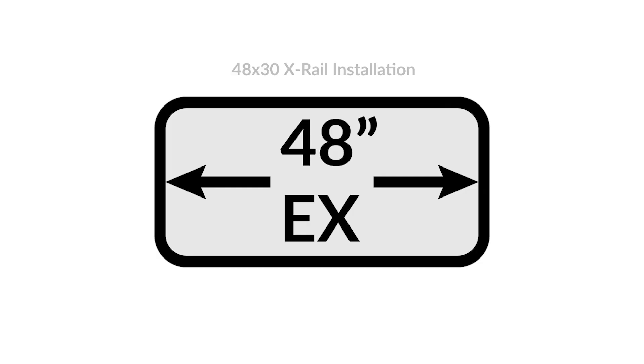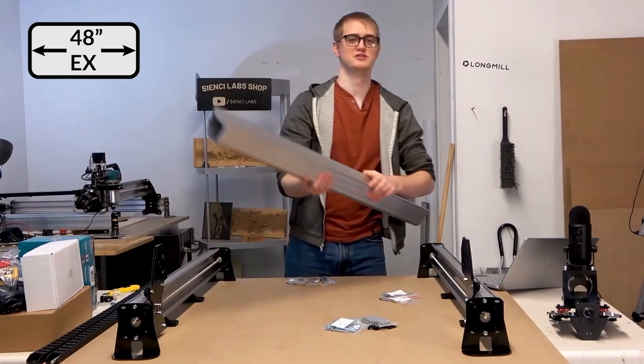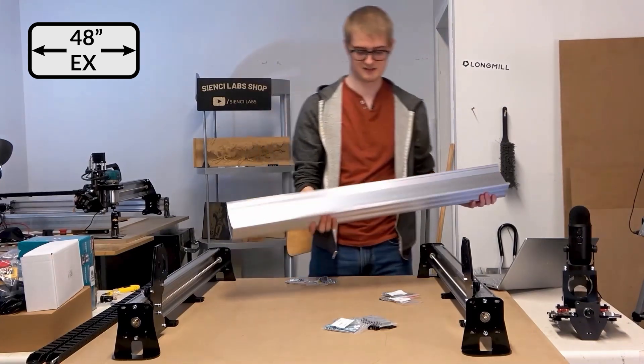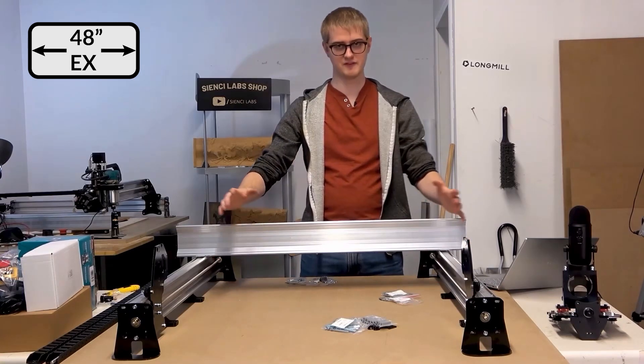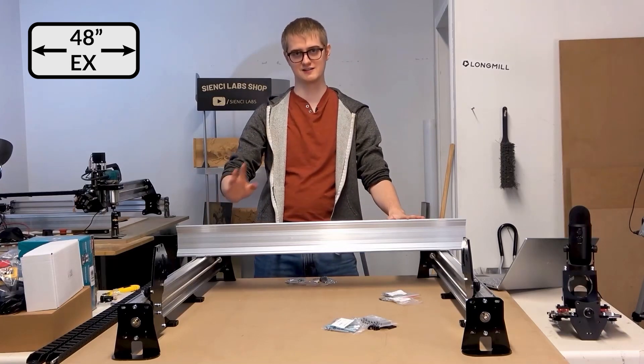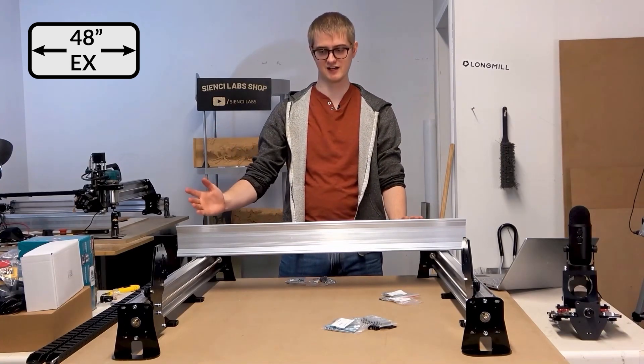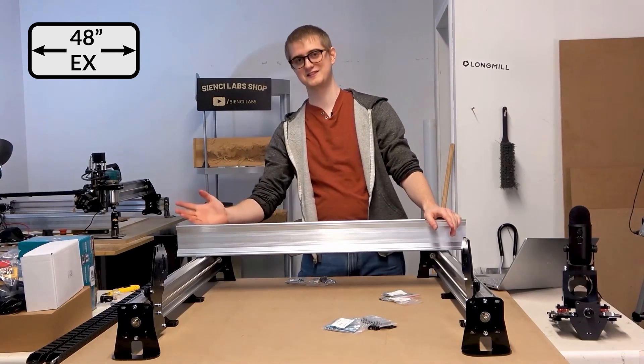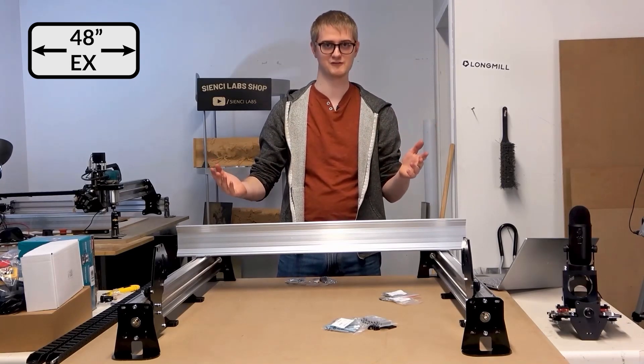Basically, what we're gonna be doing here is we're gonna be introducing this X-Rail, which is the star of the show, I like to say. And from this point, you're gonna be able to decide, do you want your control box slash electronics for your machine on the right side? Or sorry, for you, on the right side, or on the left side, because we actually designed this machine to be perfectly symmetric.